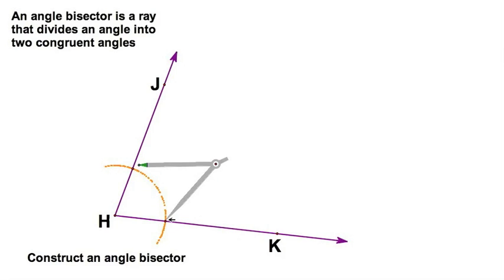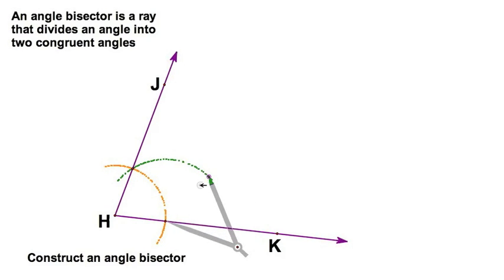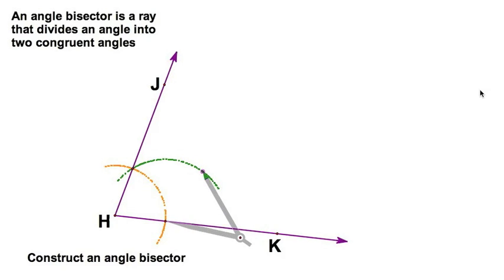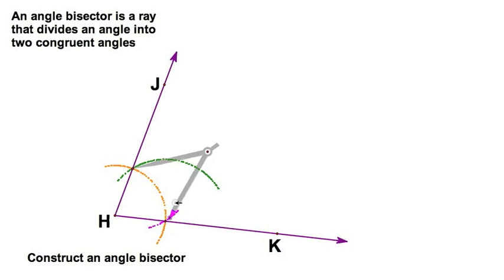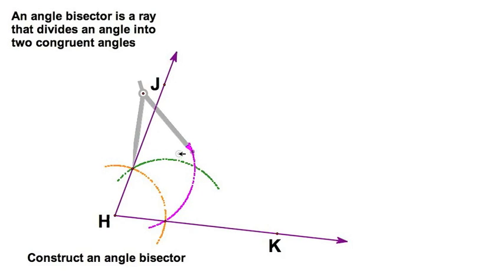I'm going to put my compass here, right there as a needle. I'm going to swing an arc through this intersection, out here where I expect to have an intersection with another arc. That would be the arc formed by putting the needle here and swinging through the other of my two equidistant points. Beautiful.